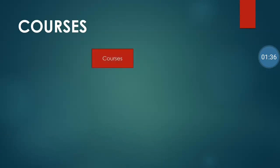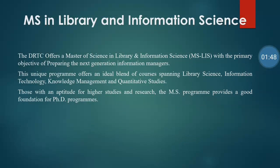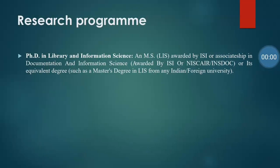DRTC mainly provides two courses: one is the MS in Library and Information Science, and the next is a research program. The MS in Library and Information Science, equivalent to a master's degree, offers an MSLIS with the primary objective of preparing the next generation of information managers. This unique program offers an ideal blend of courses spanning library science, information technology, knowledge management, and quantitative studies, providing a good foundation for PhD programs.